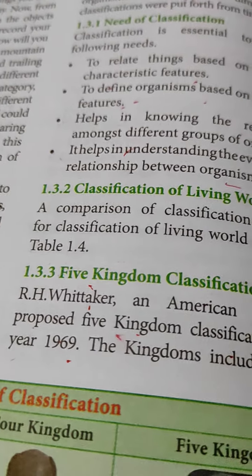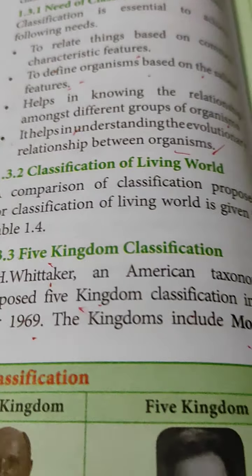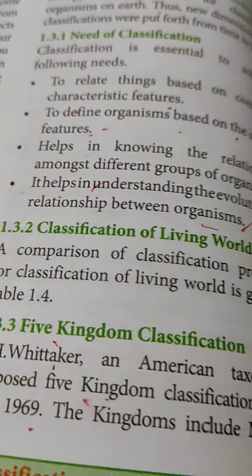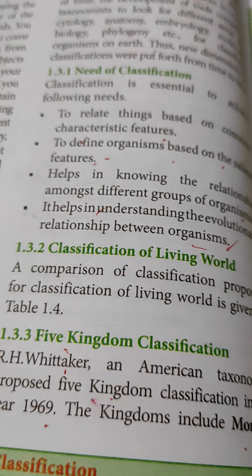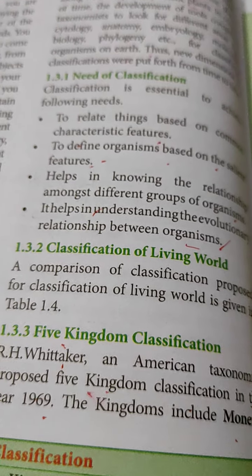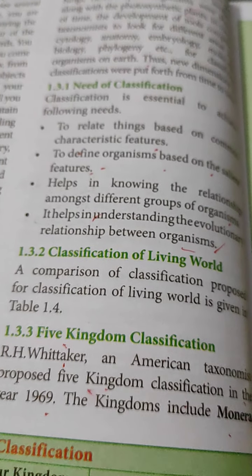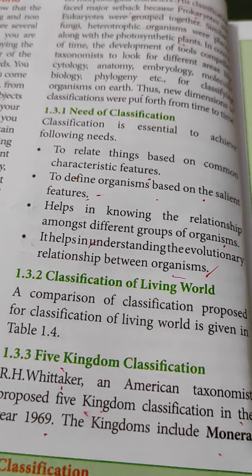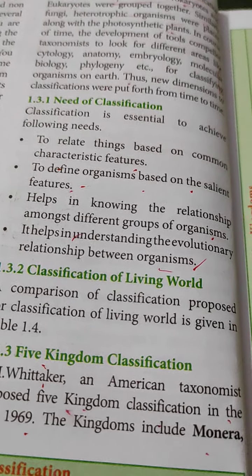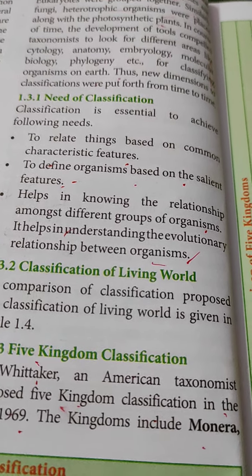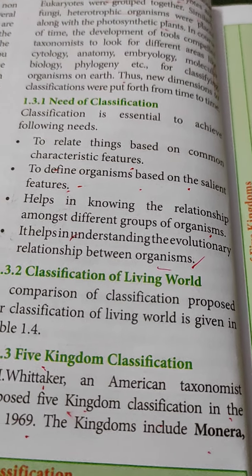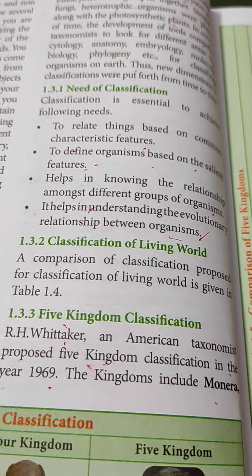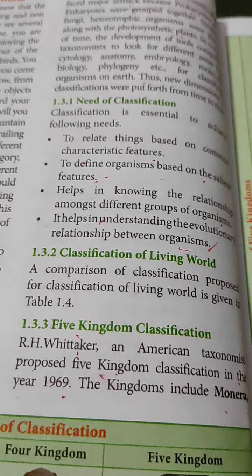Good morning, children. In the previous class, we discussed the classification of the living world and the need for classification. Now, a comparison of classification systems proposed for the living world: the five kingdom system of classification was proposed by R.H. Whittaker, an American taxonomist, in 1969.